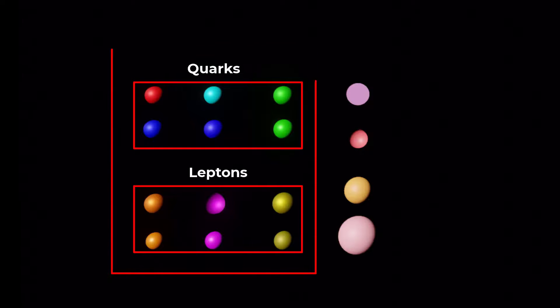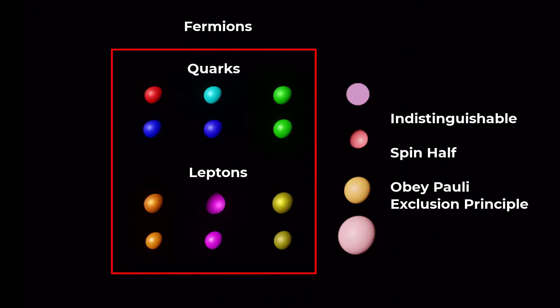Leptons and quarks are collectively called fermions, which are indistinguishable, spin-half particles that obey the Pauli exclusion principle.